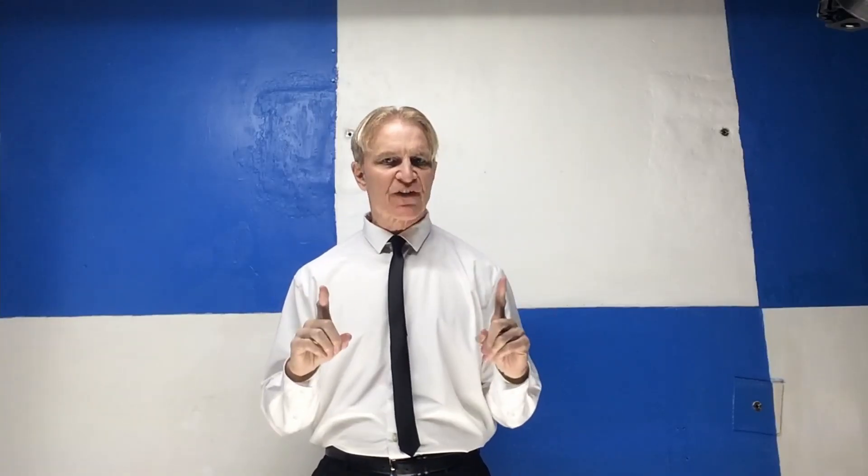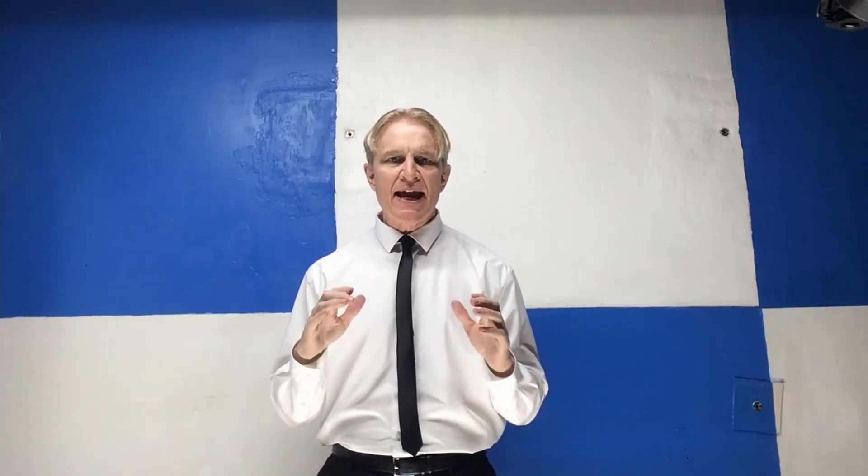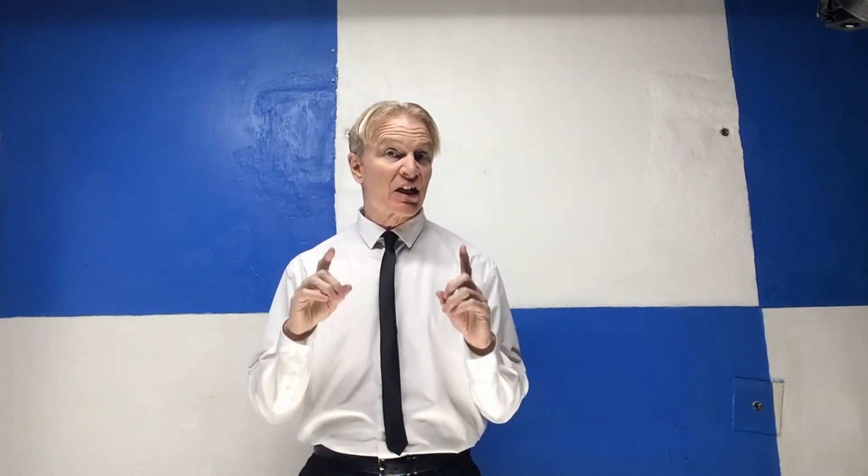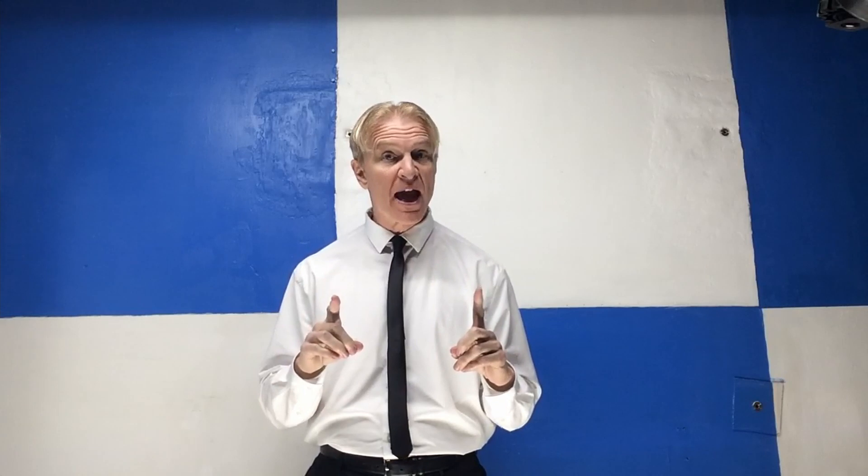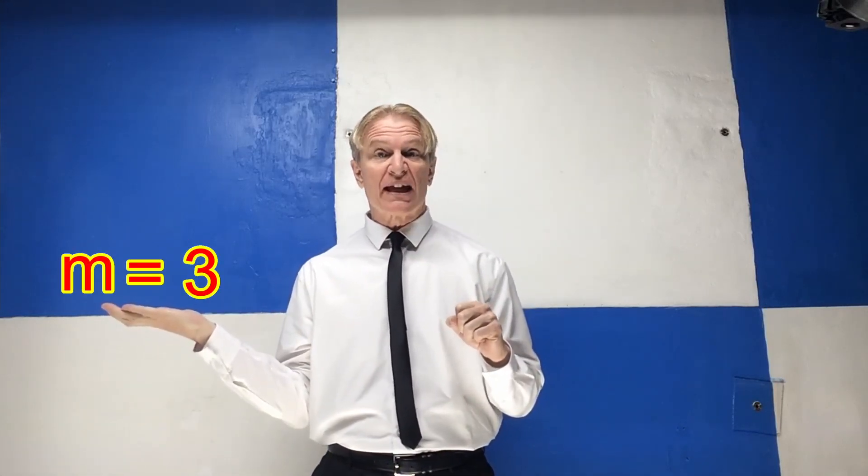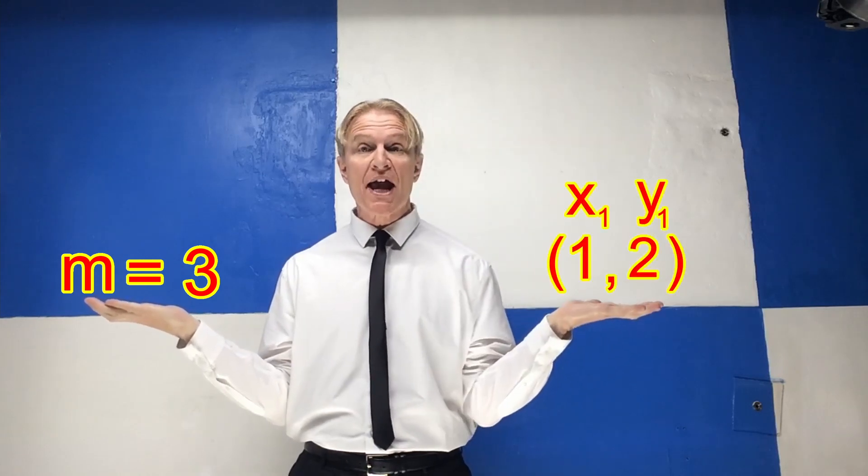Hey crew, Max von Neumann here. Today we are going to find the equation of the line in slope-intercept form that has a given slope of 3 and goes through the given point 1, 2.